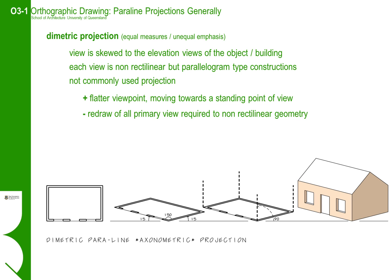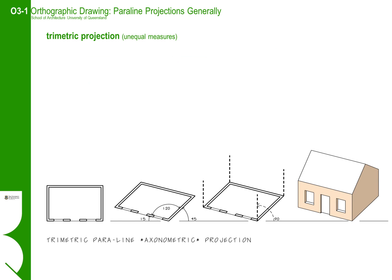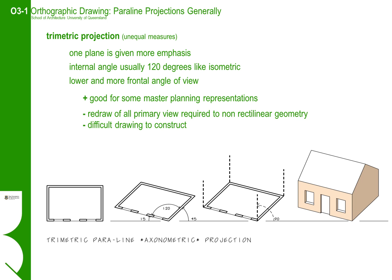However, the flat geometry makes constructing an accurate plan view problematic. The final variation in the isometric projection family is the trimetric projection, where the views and vanishing angles are all in unequal measures. In a trimetric projection, one plane is given more emphasis. The internal angle of the plan is usually 120 degrees, like an isometric view, and it also has a lower and more frontal angle of view. A trimetric projection would be great for master planning massing studies, but it has its drawbacks in that there is a significant amount of redrawing, and because the angles are different, it also means using more than one set square, which can be cumbersome.